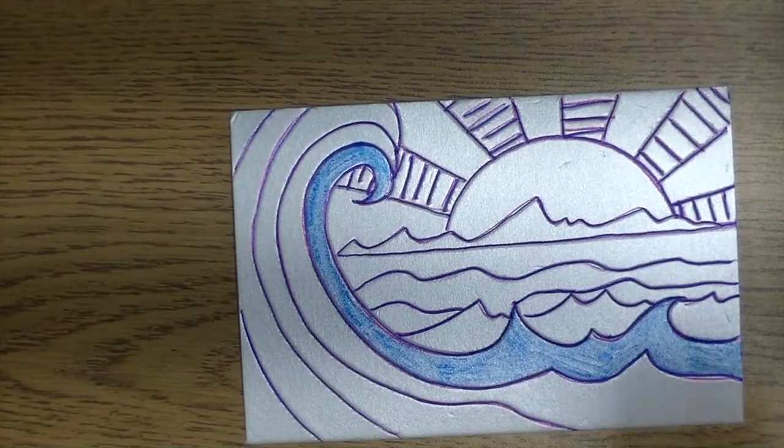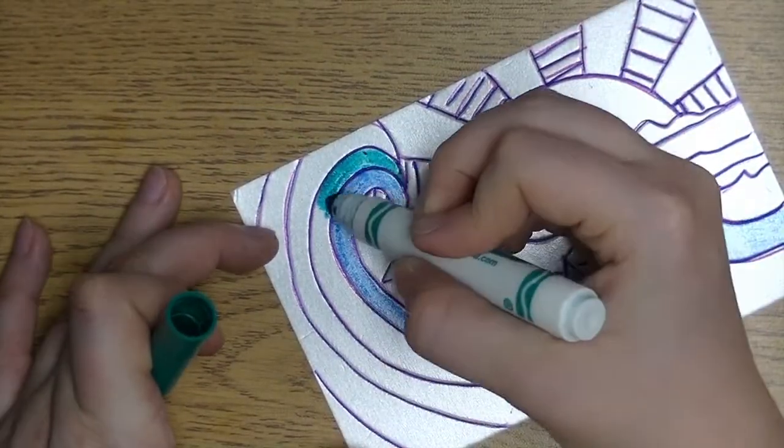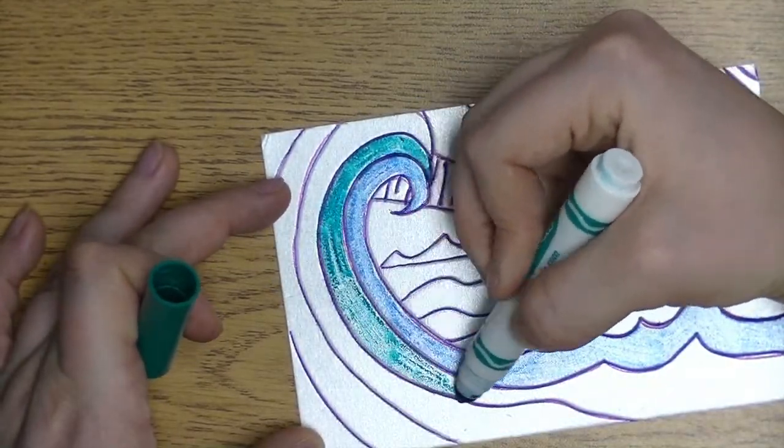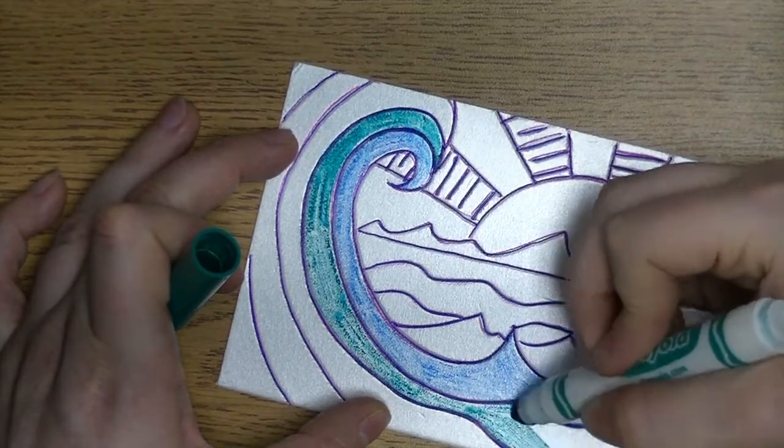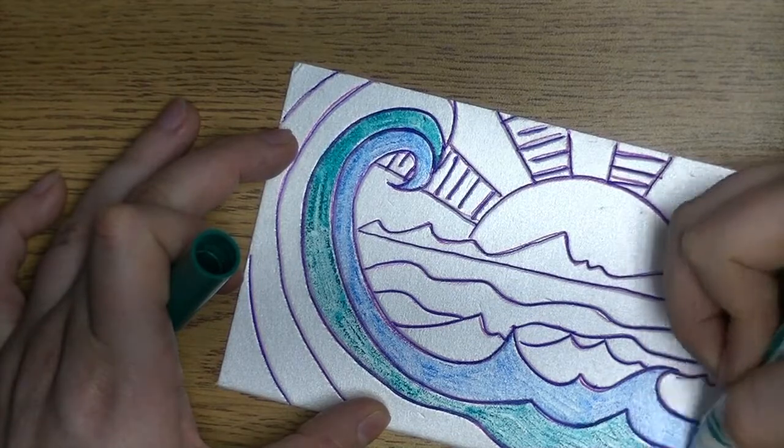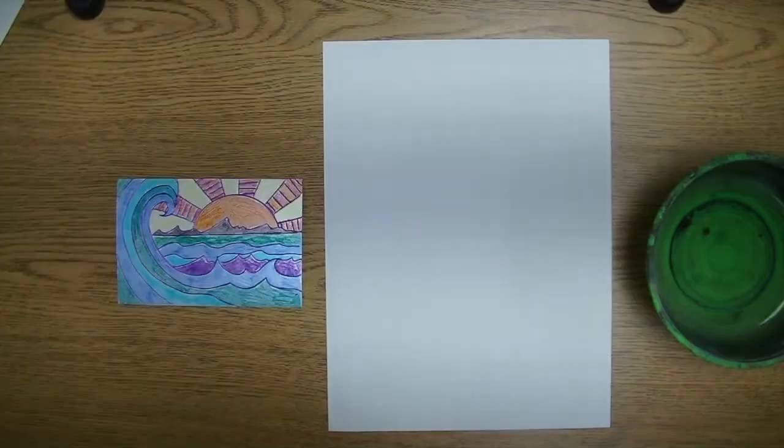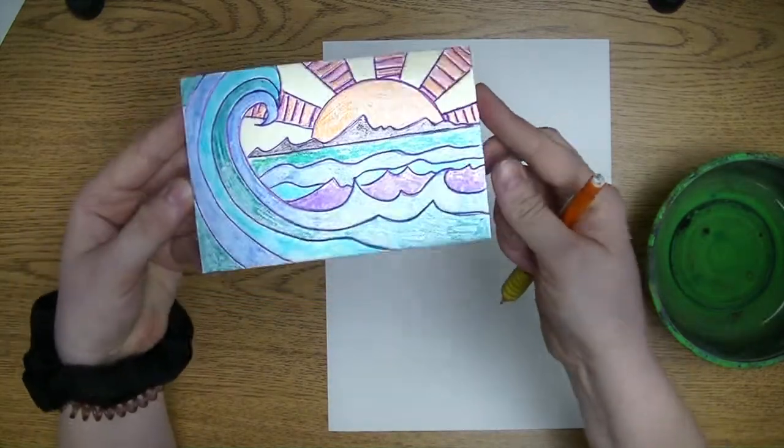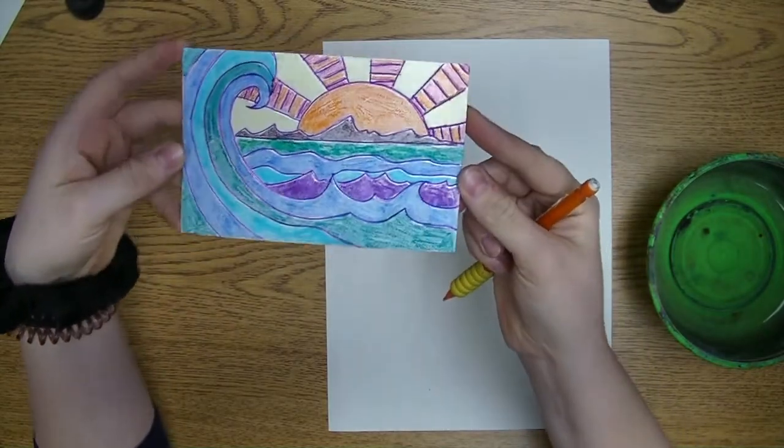Really try to get a good layer without leaving any bald spots of the marker, and that will really help the prints have a nice vibrant color later on. I'm not going to show you the entire coloring of this, but go ahead and use the markers and color your whole print. You can see I have my whole print colored in with marker.